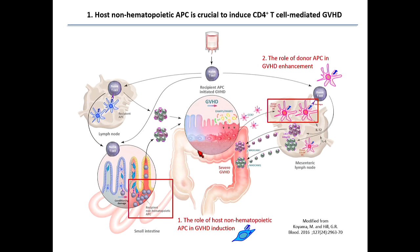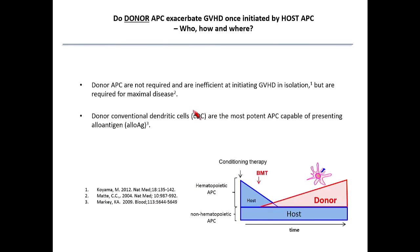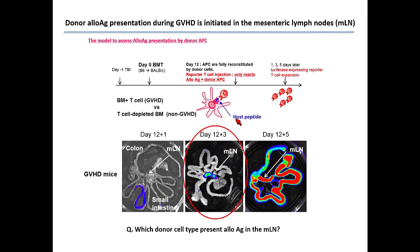Now moving on to the second part — after GvHD is already induced. What we know about the donor APC: donor APCs are not required and are inefficient for GvHD induction as shown in the previous slides, but they are required for maximal disease. Donor conventional dendritic cells are the most potent APCs capable of presenting alloantigen. We know that donor APC exacerbates GvHD, but we don't know the further mechanism — who, how, and where. So to ask this question, we developed a model to assess antigen presentation by donor APC exclusively.